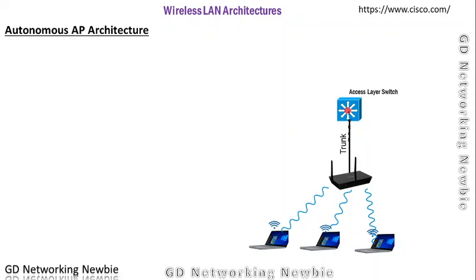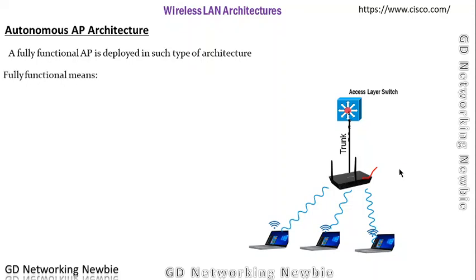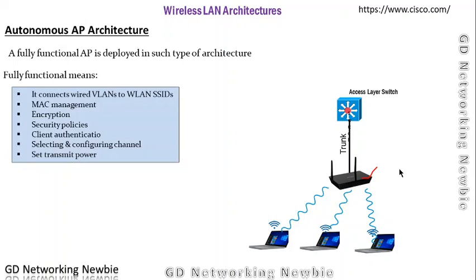The first architecture we are going to discuss is autonomous access point architecture. In this architecture, a fully functional access point is deployed. Fully functional means this access point performs the job of connecting wired VLANs to wireless LAN SSIDs. It handles MAC management, encryption, security policies, client authentication, channel selection, and setting transmit power — all functionality is performed by this single access point.